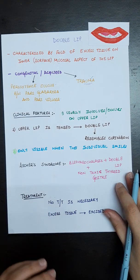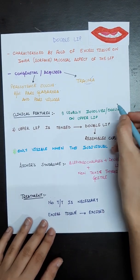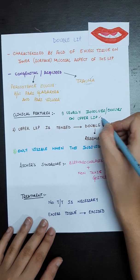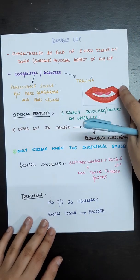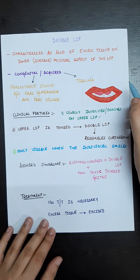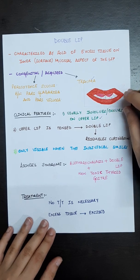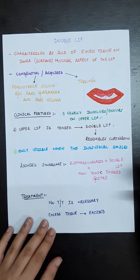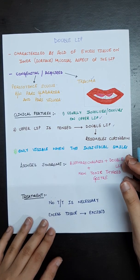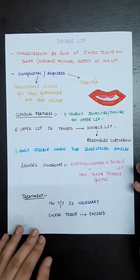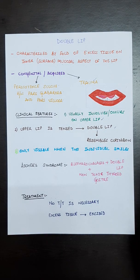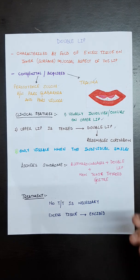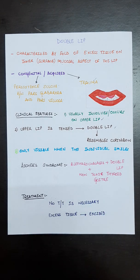The clinical features of double lip: it usually occurs on the upper lip. In this diagram you can also see it is present on the upper lip. When the upper lip is tensed, double lip can be seen. When the individual is at rest, you won't be able to see any swelling or double lip. But when the patient's lips are tensed — when the individual is smiling — you will easily appreciate double lip.